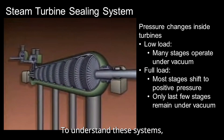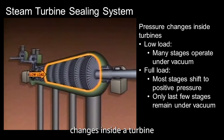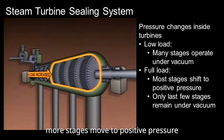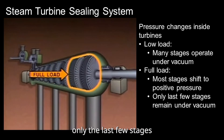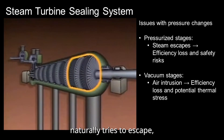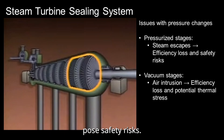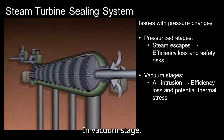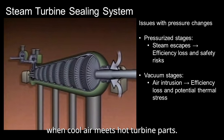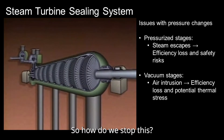To understand these systems, it helps to know how pressure changes inside a turbine. At low loads, many turbine stages operate under a vacuum. But as load increases, more stages move to positive pressure. At full load, only the last few stages are still under vacuum. In pressurized stages, steam naturally tries to escape, especially where the shaft penetrates the casing. Without controls, steam loss would lower efficiency and pose safety risks. In vacuum stages, air tries to sneak in, reducing efficiency because air removal is energy intensive. It can also cause thermal stress when cool air meets hot turbine parts.